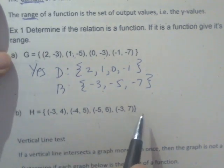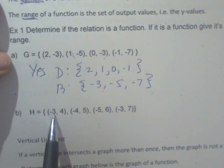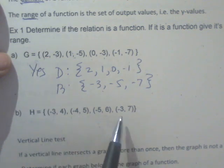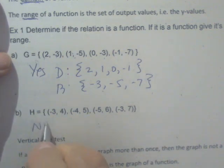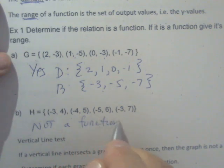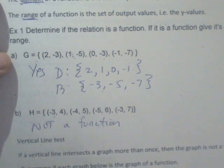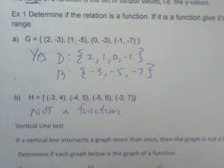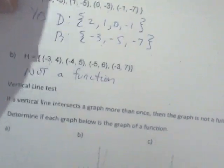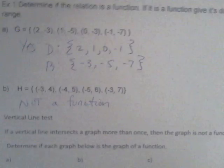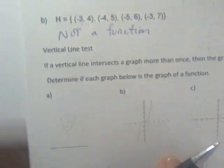For this one, we have negative 3, negative 4, negative 5, and then negative 3 again. So I can stop right here. This is not a function because I repeated x's with different y's. That's how you can determine if something's a function from a finite set of points.